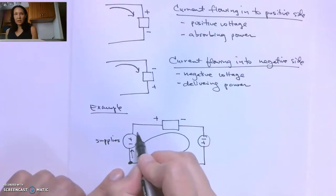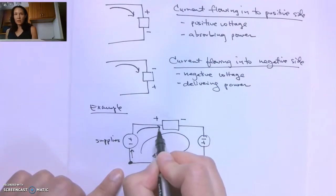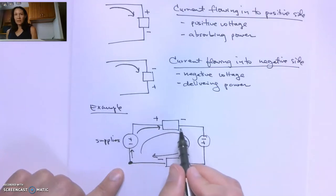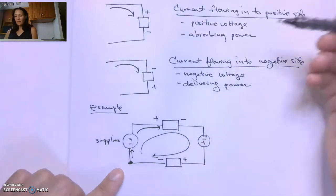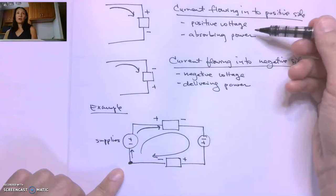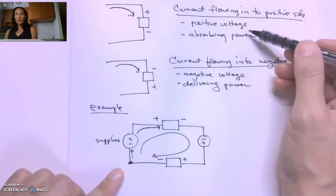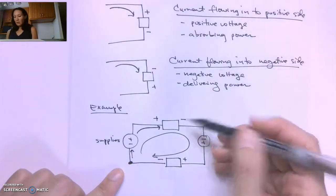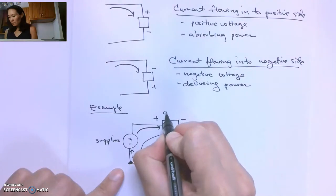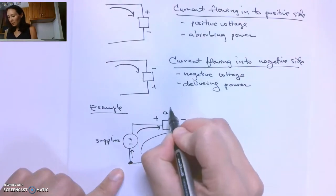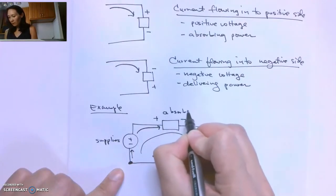We continue on in our loop. The current goes in this direction and is now flowing into the positive side of this circuit element. So that is the first case — this will be a positive voltage, and this circuit element is absorbing power.